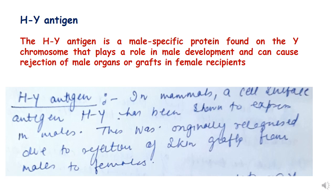Another antigen is the HY antigen, found in mammals. It is a cell surface antigen expressed in males only, and was originally recognized due to rejection of skin grafts from males to females. Thank you students — please see the next lecture.